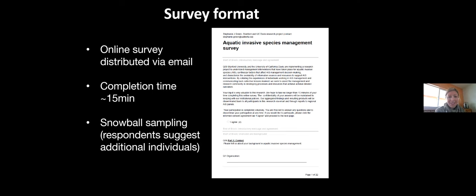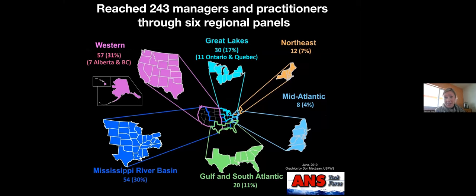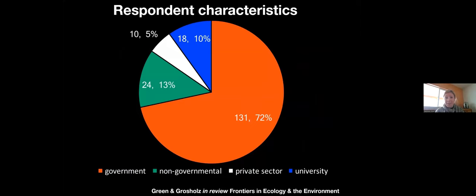We had almost 250 responses from managers and practitioners throughout six regions, including Canada. The breakdown of respondents was mostly folks working on this issue from within government — both federal, state, and local — making management decisions and enacting management plans and activities for aquatic invasive species. We also had participation from folks in the nonprofit space, private sector, and university researchers collaborating on this work.